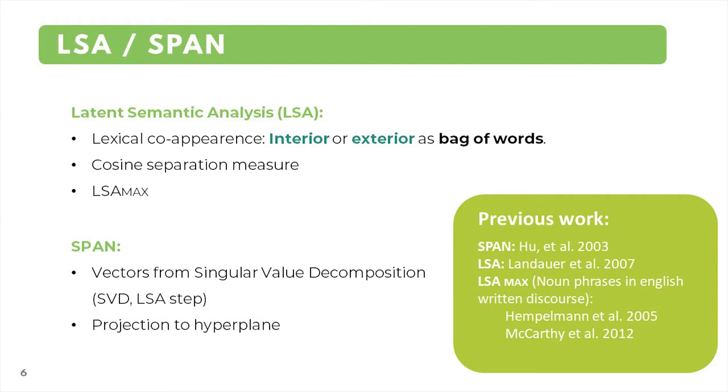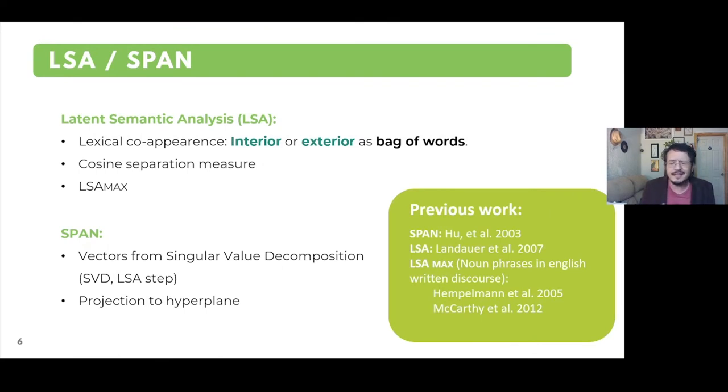Latin Semantic Analysis is a method that captures relationships between text fragments from their lexical co-appearance. The interior of the fragments or the exterior lexical context of appearance can both be used as bag of words, which means that the word order is discarded. These bags are treated as matrices where each word is a dimension and each vector the fragment analyzed. The cosine separation measure is calculated between these vectors to determine the degree of relationship.